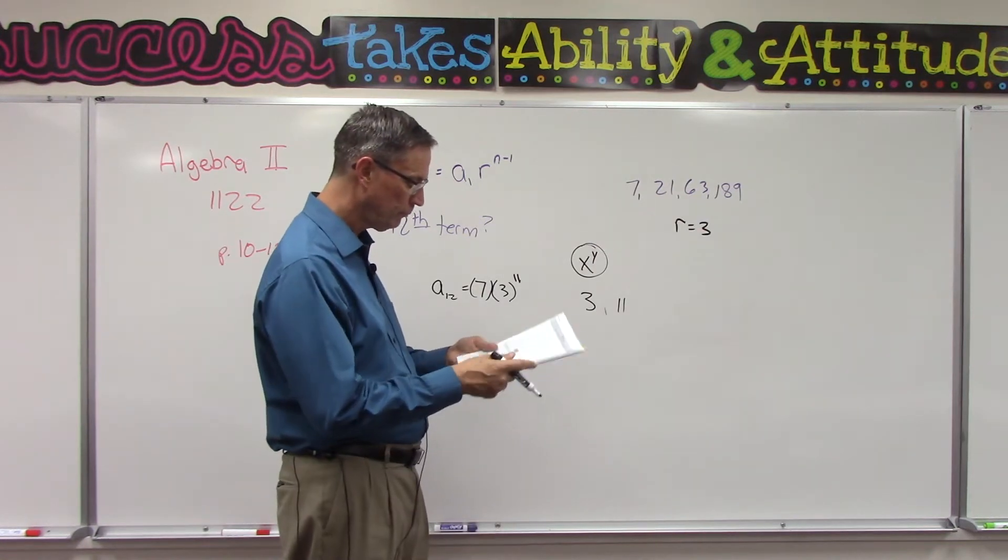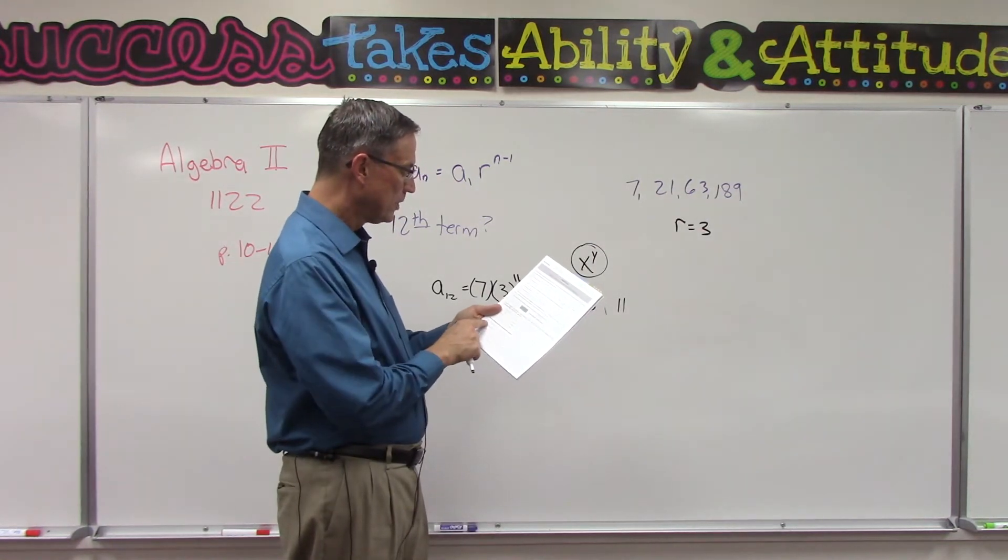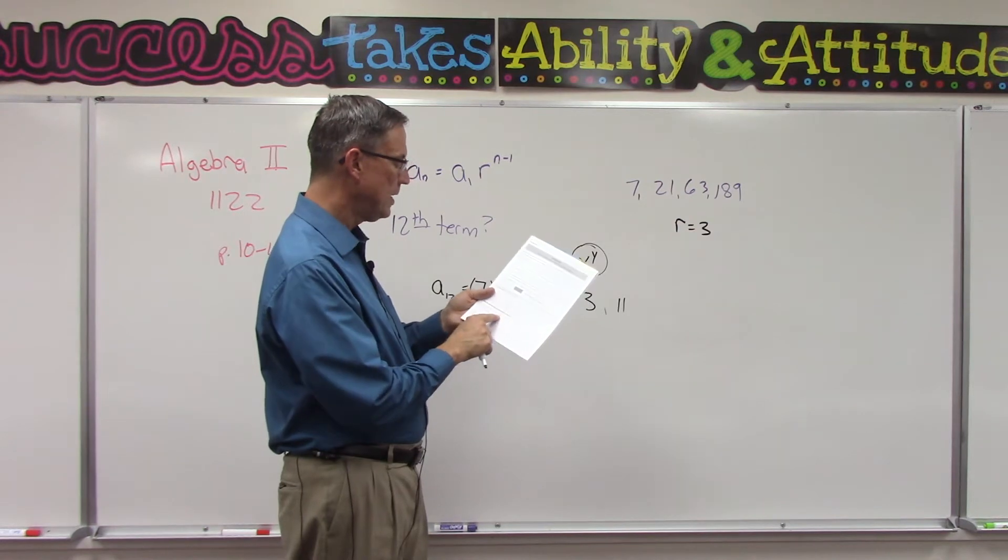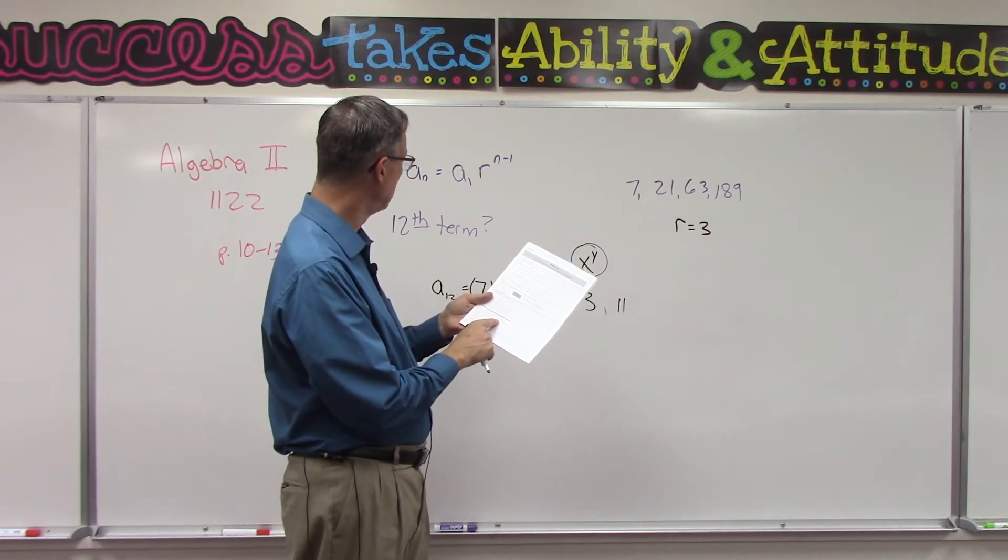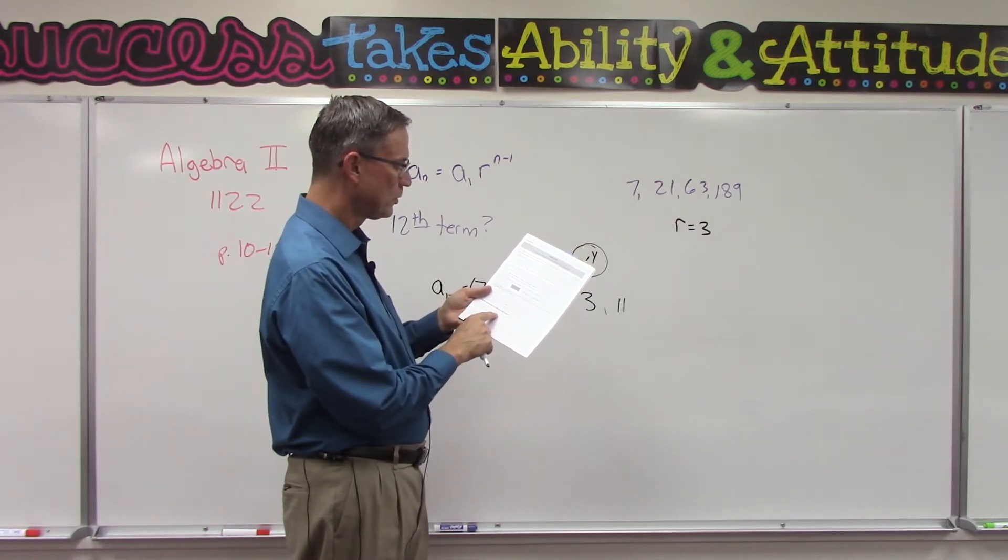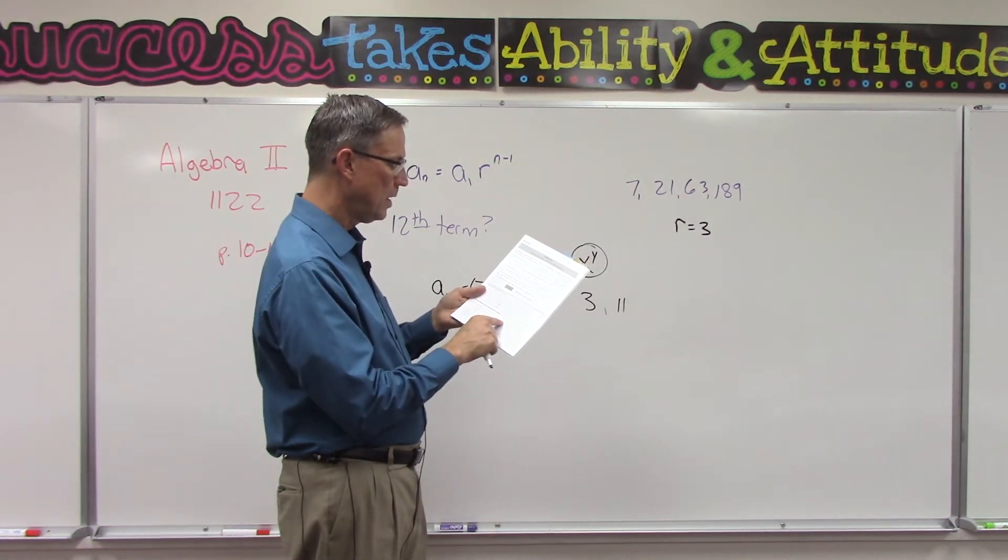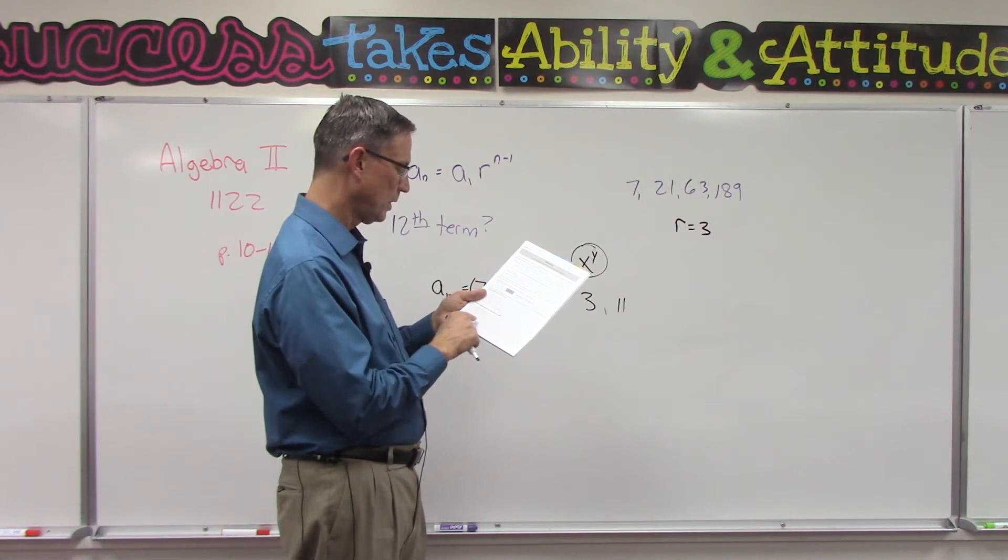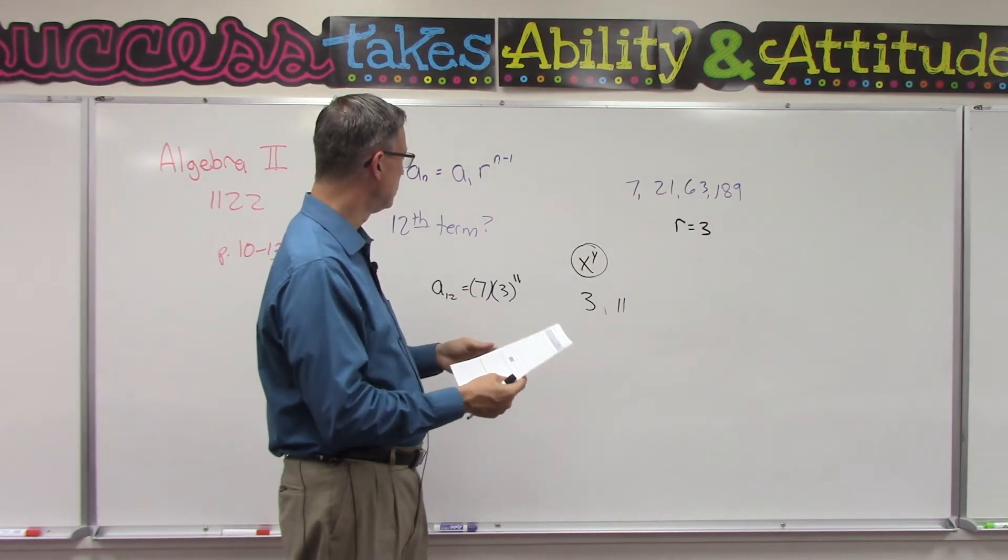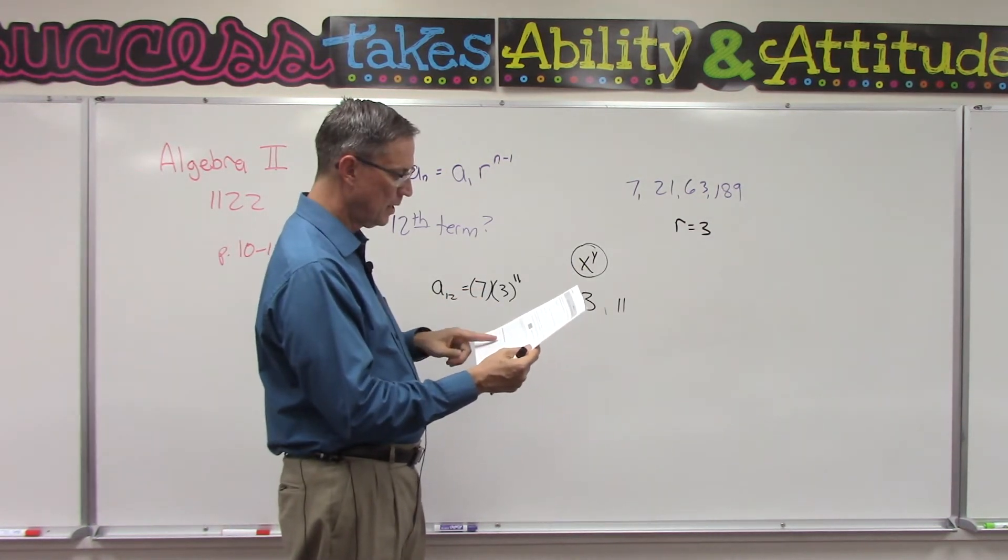Okay, so they have the sequence here, and then they want you to find the eighth term. So a to the eighth—the subscript a tells you what term—so a to the eighth, a to the 10th, a to the 14th. And so you're going to just keep plugging in the 8, the 10, the 14.